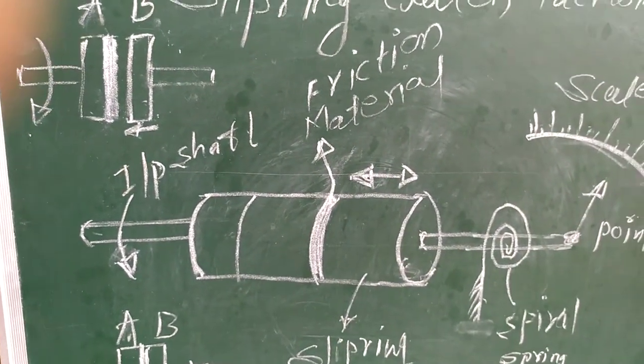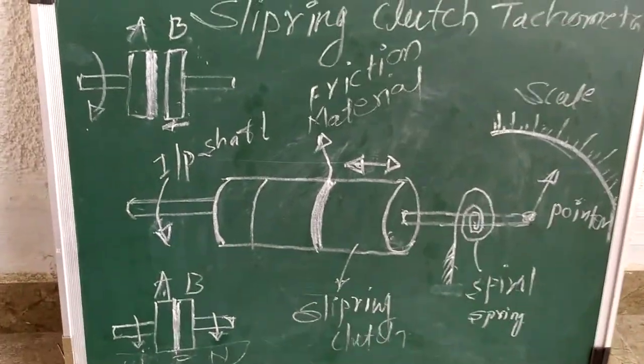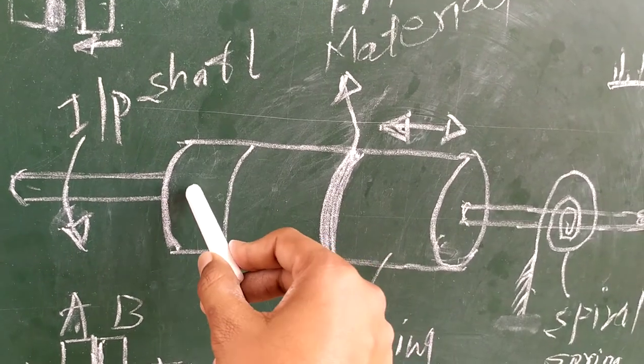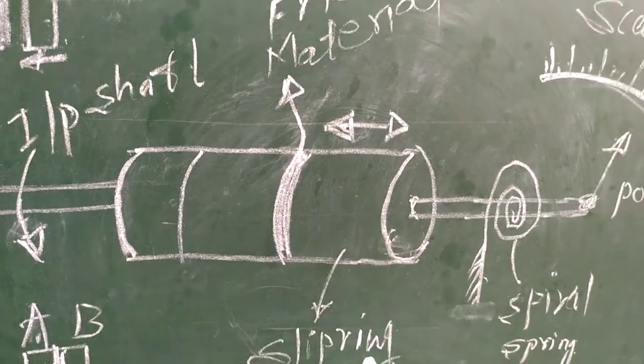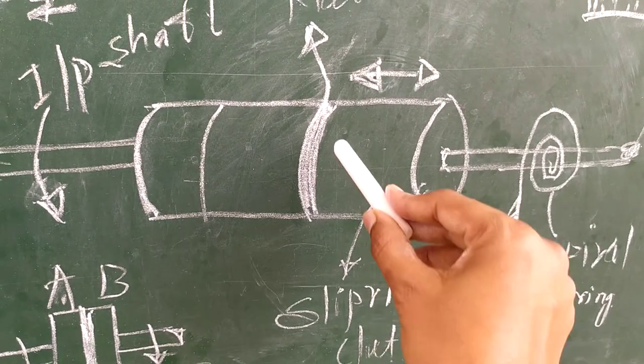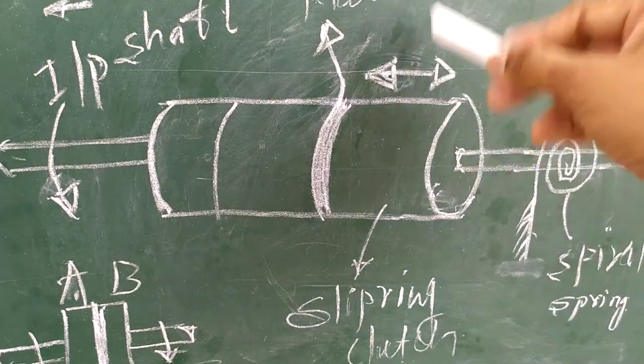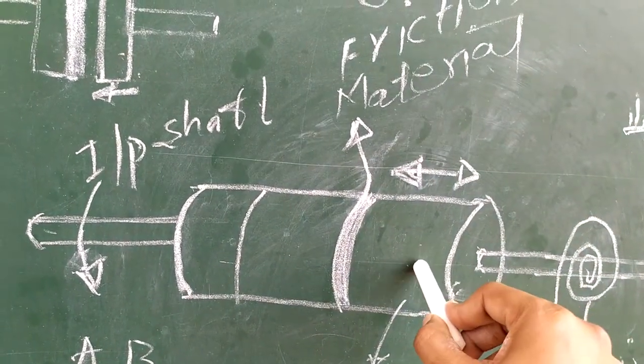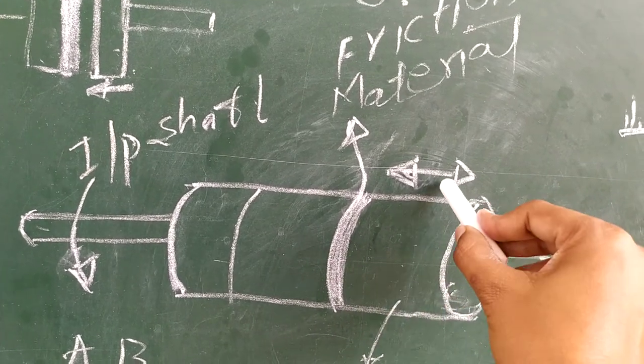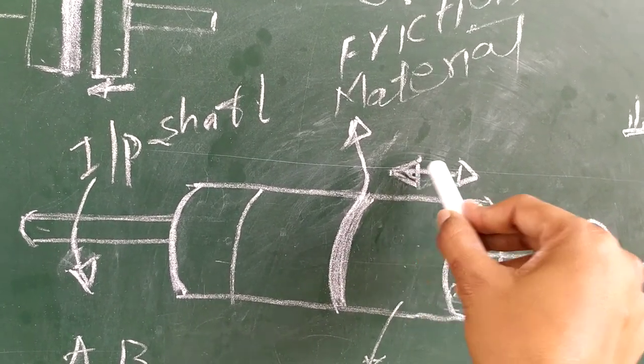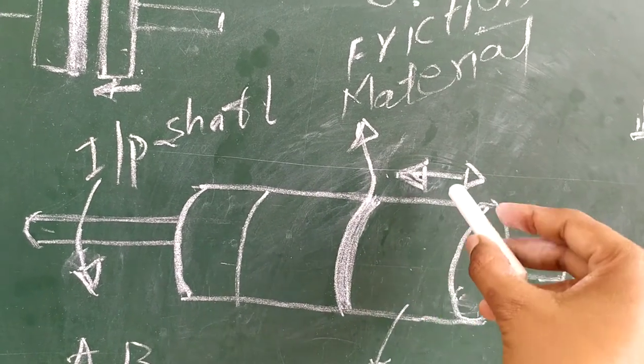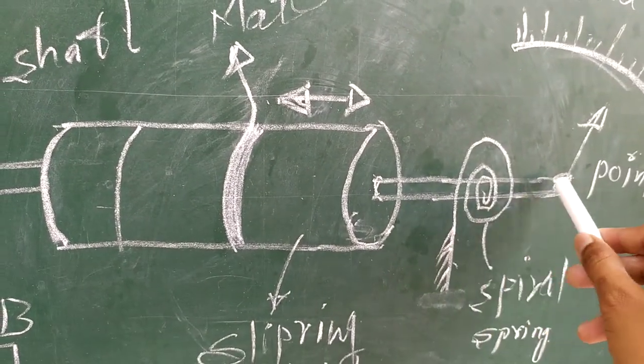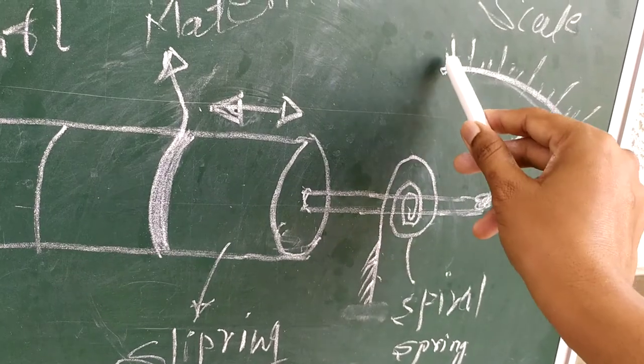Let's see the construction. Here is the input shaft whose speed we have to measure. In between, here is the device that is known as the slip ring clutch. Internally, here is the friction lining or friction material. Then here is the clutch which is movable, and we can move it towards the right and towards the left. It has the shaft attached with some mechanical arrangement of spiral spring, and at last there is a pointer which can move over the calibrated scale.